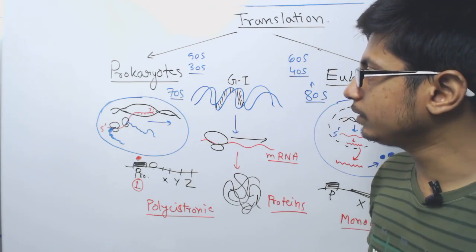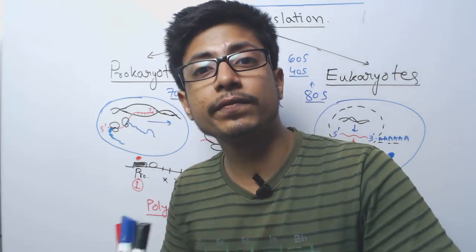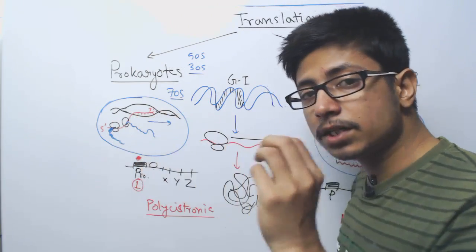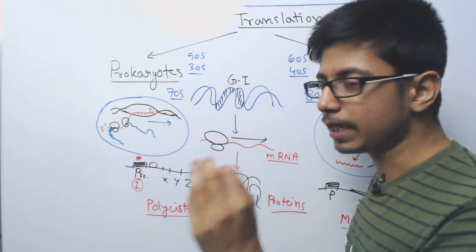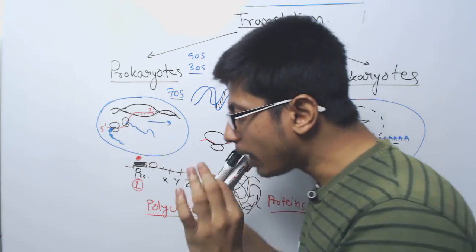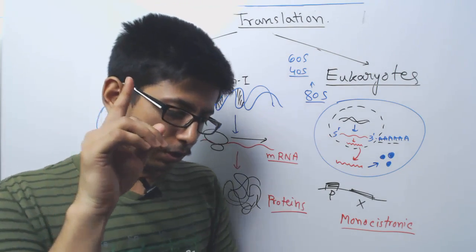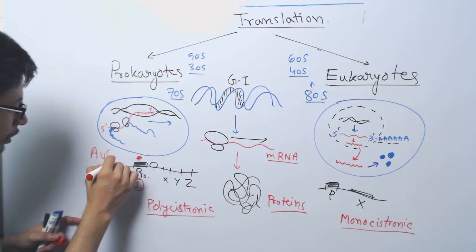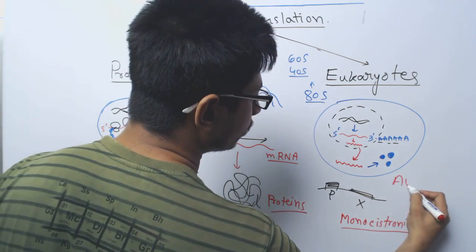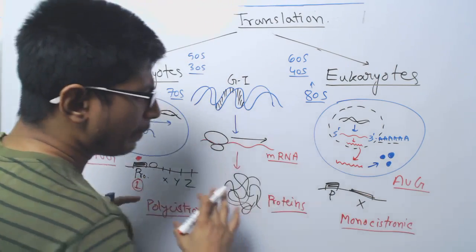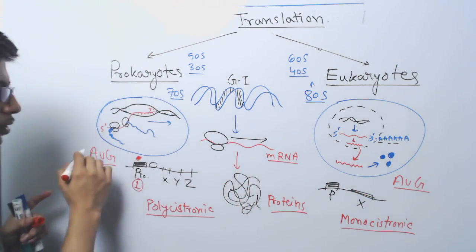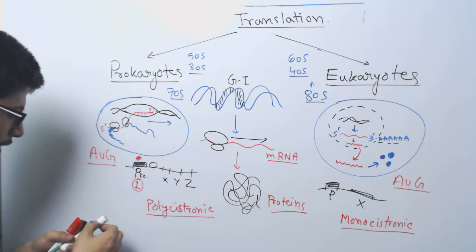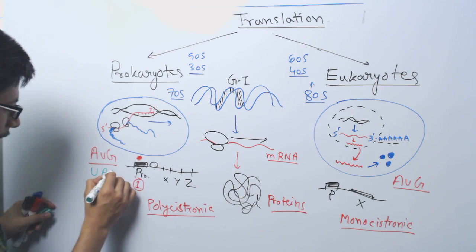If you talk about the initiation phase of translation or protein synthesis, the first amino acid brought to the place is formylated methionine in prokaryotes. The first start codon for prokaryotes is AUG, for eukaryotes also AUG. That is why they have multiple similarities. Start codon AUG for both sides and the anticodon should be UAC.